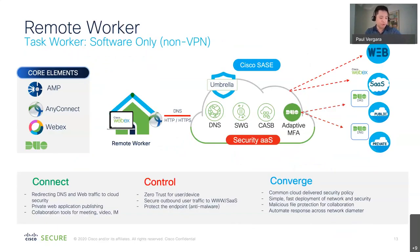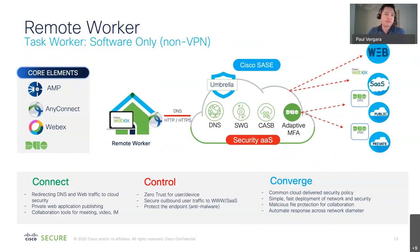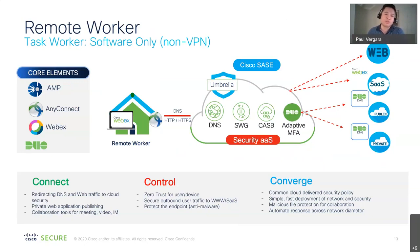Let me cover some typical SASE scenarios and use cases. The first is a task worker — a specific persona where the user can do their entire job without a VPN. That's the nature of how applications have moved to the cloud and to SASE. The core elements we provide this user include AMP threat protection. If they wanted to use AnyConnect as an AMP enabler or for Umbrella DNS, that would still be there — just not for VPN. And WebEx is listed because we've integrated AMP deeply into non-security products as well. Duo facilitates a lot of the identity piece.